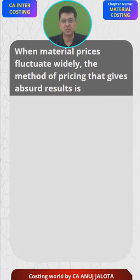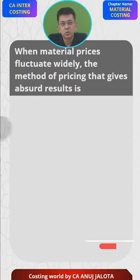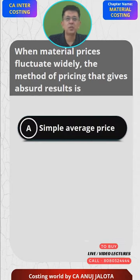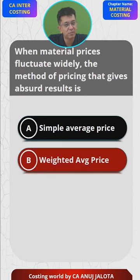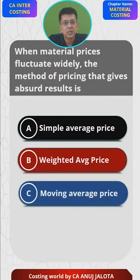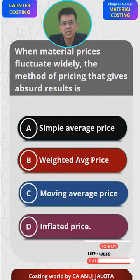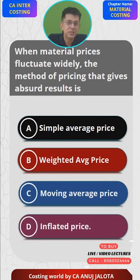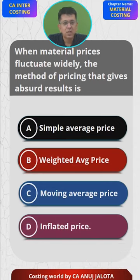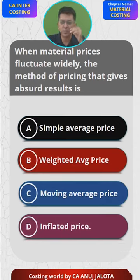The four options are: A is simple average, B is weighted average, C is moving average, and D is inflated price. Now I hope that you all know how each and every method works.